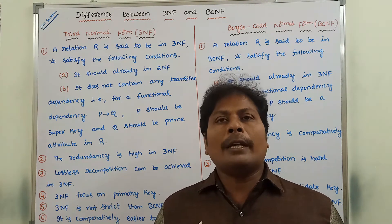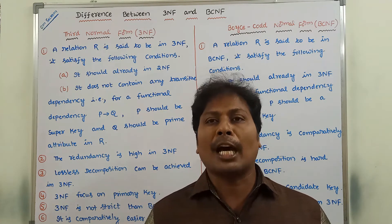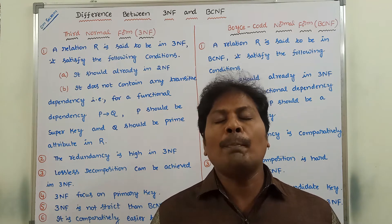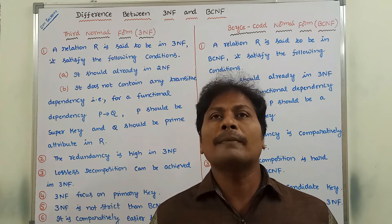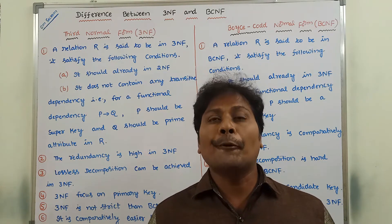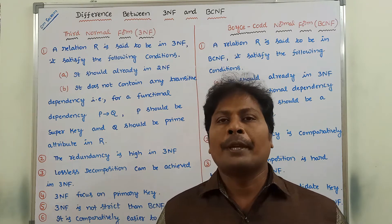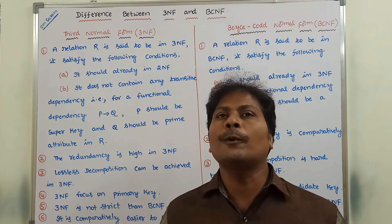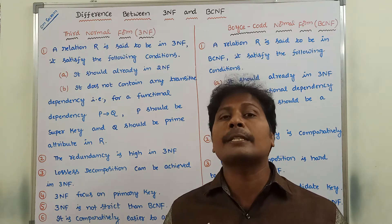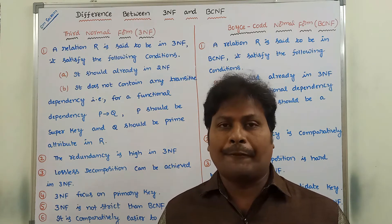First of all, we already know that there are six types of normal forms available: first normal form, second normal form, third normal form, BCNF, fourth normal form, and fifth normal form. Now we have to find out what are the main differences between 3NF and BCNF.